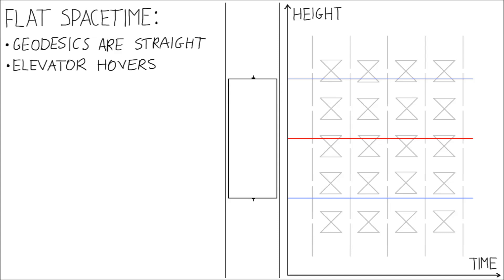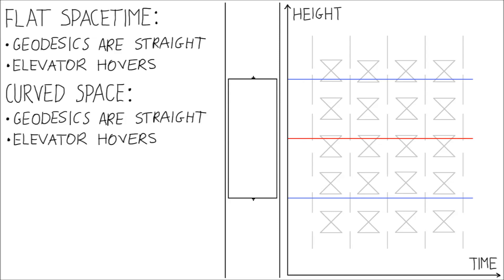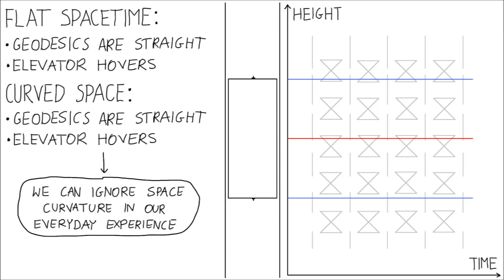Now, let's say that only space is curved and it gets denser towards the Earth. Let's cut the ropes. After one second, all parts of the elevator travel the same distance through spacetime, indicating that again hovering in the elevator shaft is motion along a geodesic. This means that in our everyday experience we can ignore how the Earth curves space because its effects on the motion of objects around us are negligible. Curved space does not make things fall.